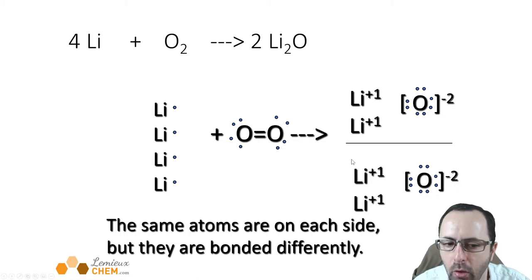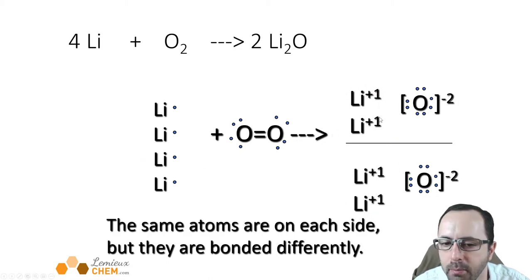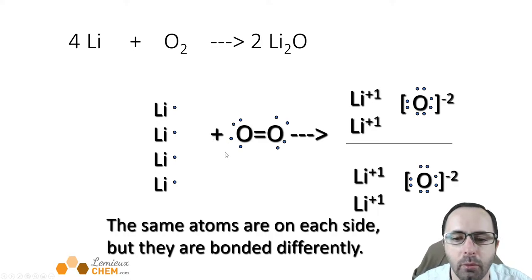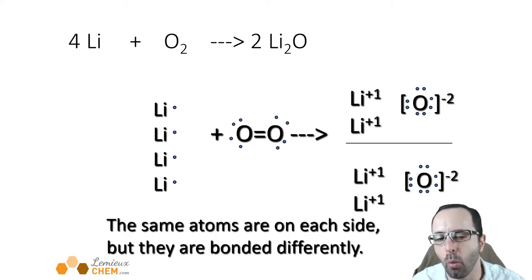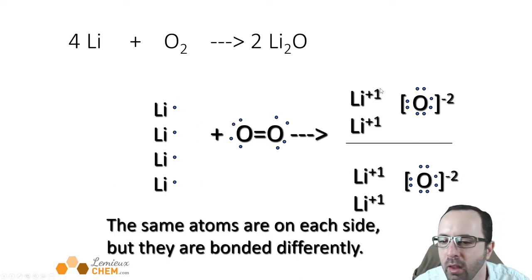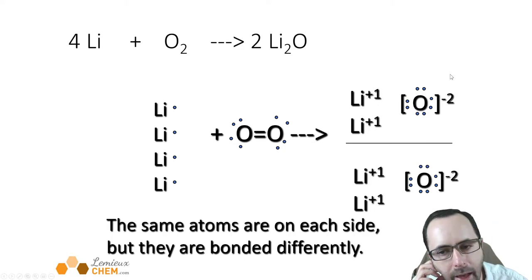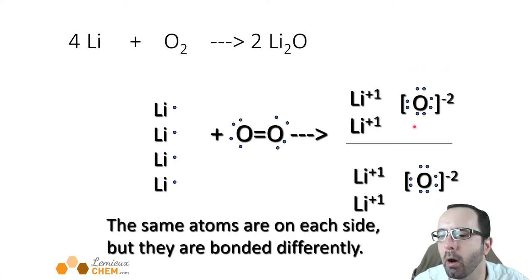This represents one unit of lithium oxide, and then there's a second. Notice what happens: altogether there are four lithium atoms on the left and four lithium ions on the right, and two oxygen atoms on the left and two oxide ions on the right. In a chemical reaction, atoms are not destroyed and no new atoms are produced. What happens is that they become bonded to each other in a different way. We still have four lithium atoms at the beginning and four at the end — they're in the form of ions now, but they're still there. We started with an oxygen molecule with two oxygen atoms, and in the end we have two oxide ions — just bonded in this ionic compound.